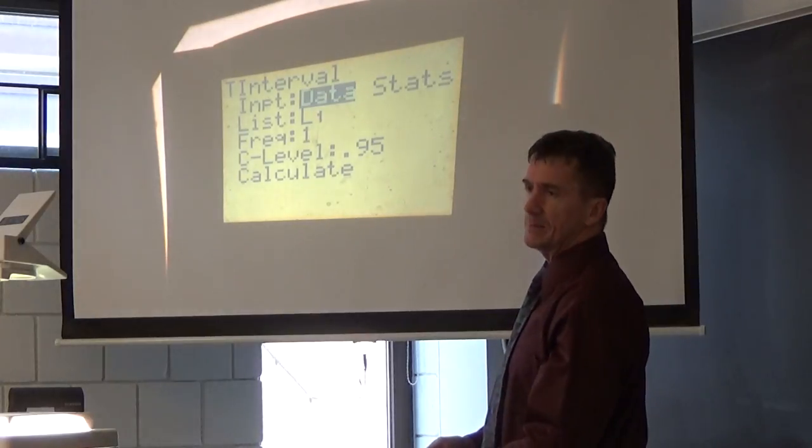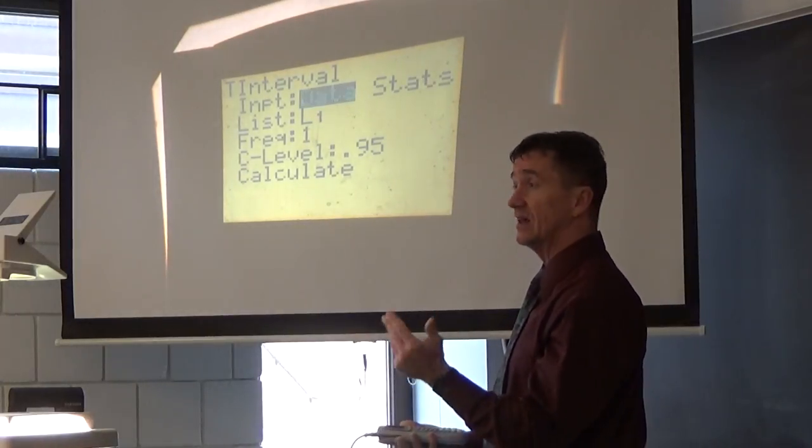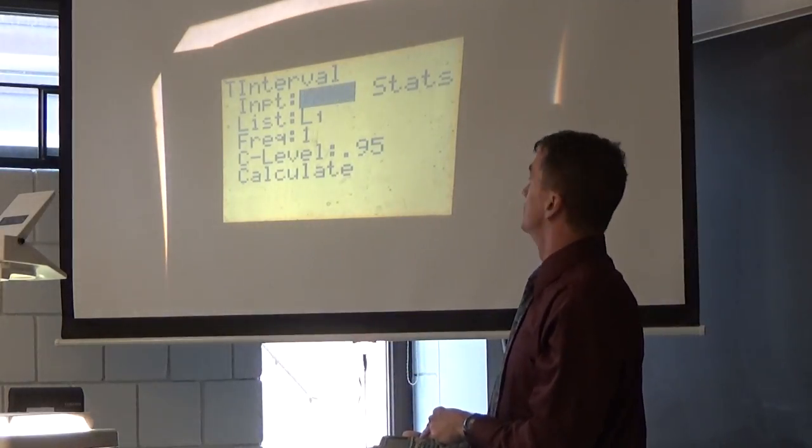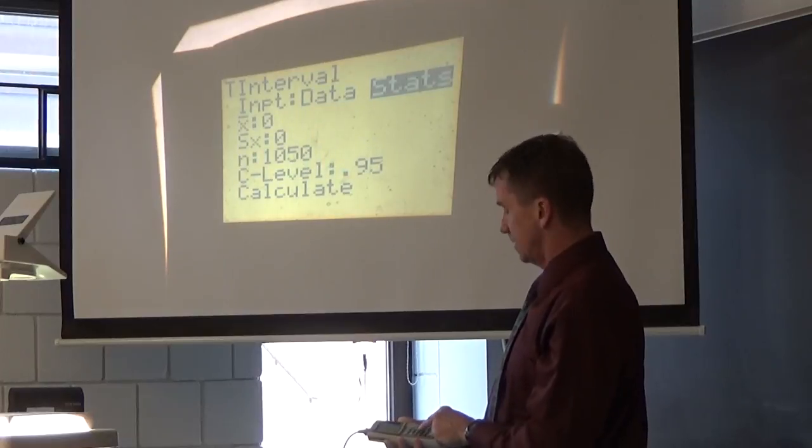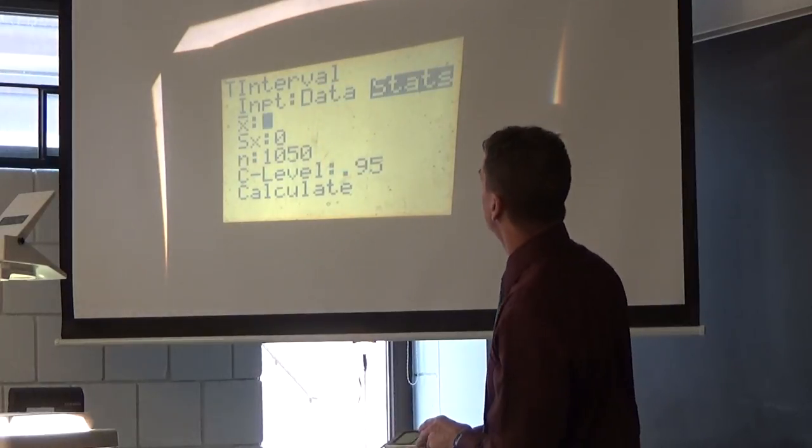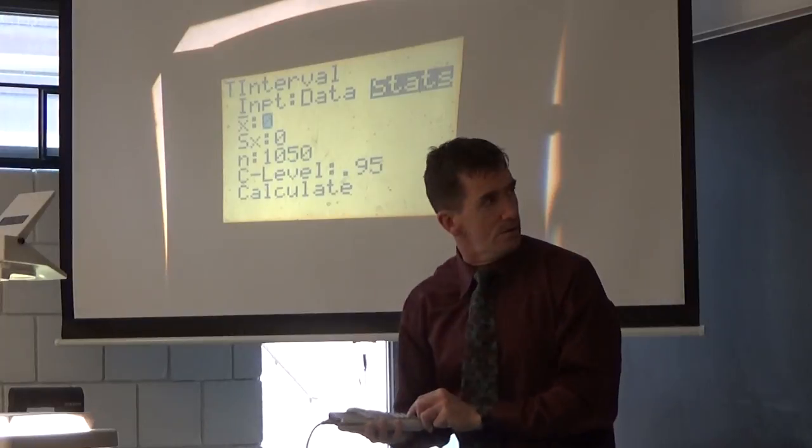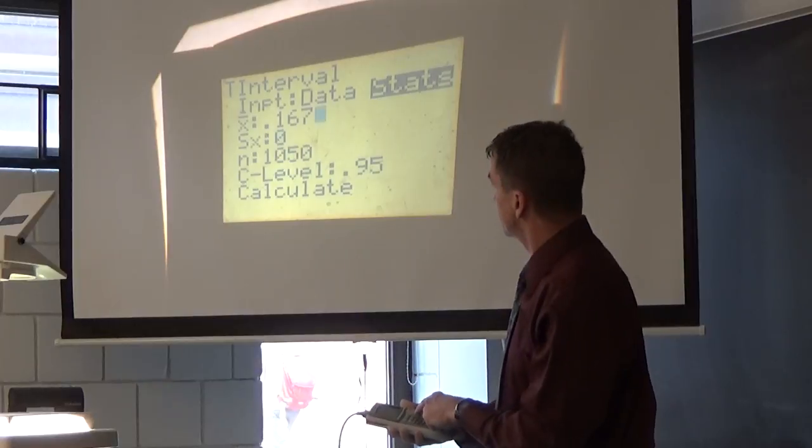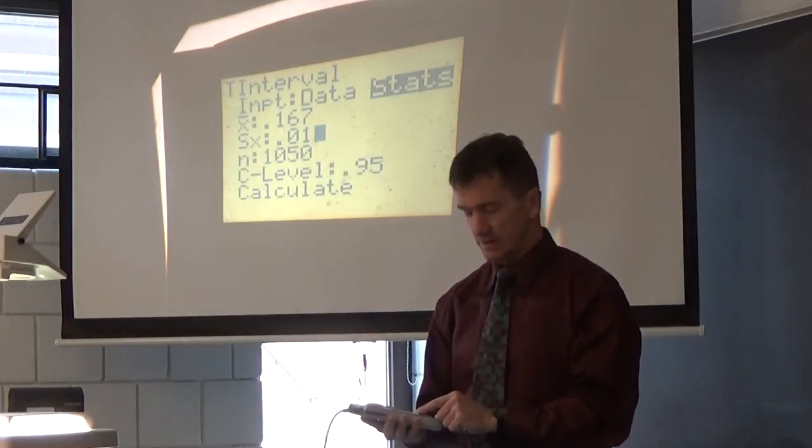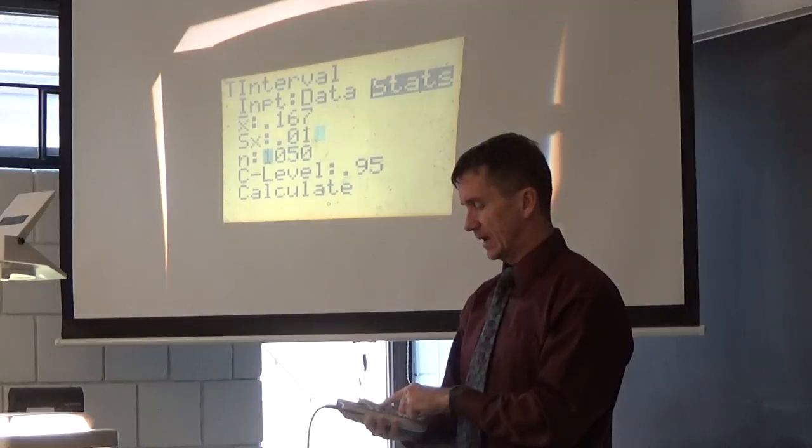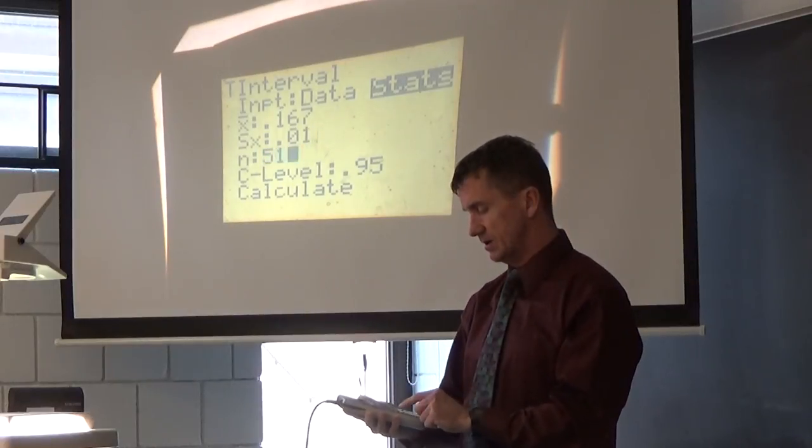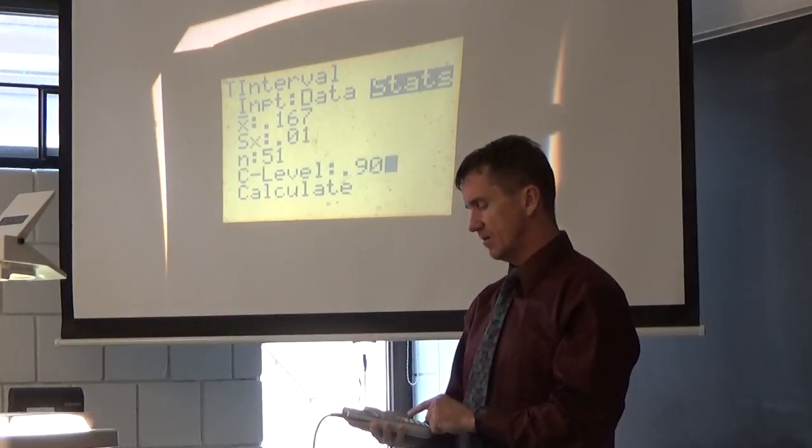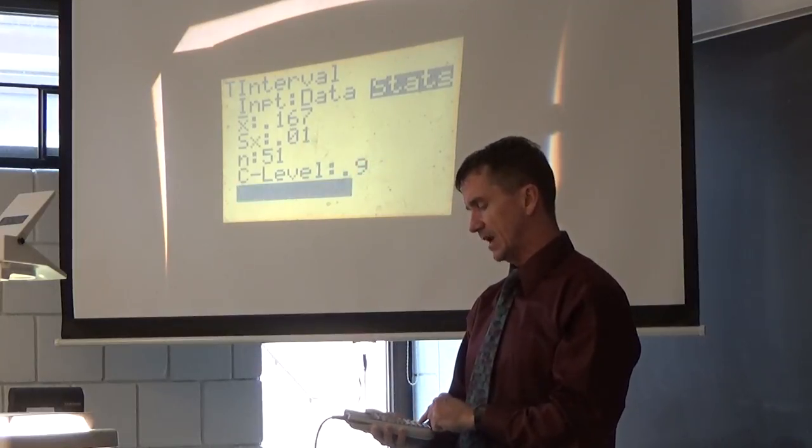Now, am I using data? That would mean they gave me data out of the textbook. No, I already have my statistics. So I'll make sure that's highlighted. And all this pops up. What was X bar? 0.167. That is a high blood alcohol concentration. What's SX? 0.01. This is 51. What's confidence level? 90, 0.90. And I hit Calculate.